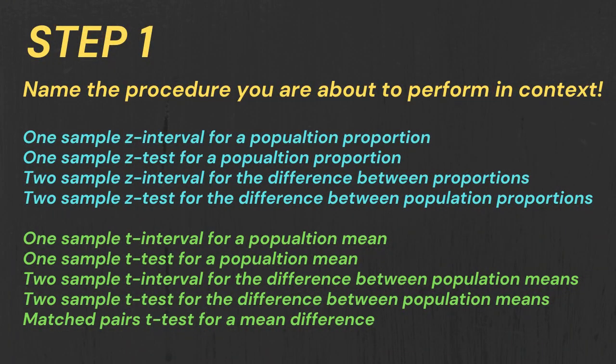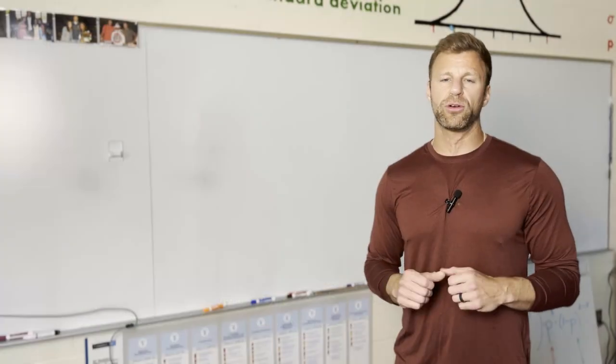Step one: naming the procedure. Be very clear here and use context. For example, you could say this is going to be a one sample z test for a population proportion of people that recycle, or a one sample t interval for the population mean size of a ball bearing. Something along those lines. If it's a test, you want to make sure you have those hypotheses in that first step as well.